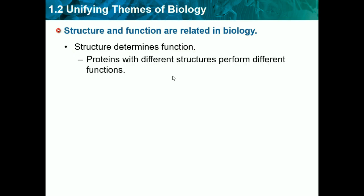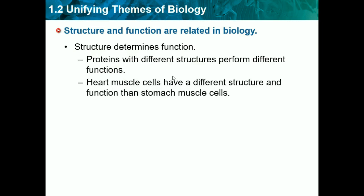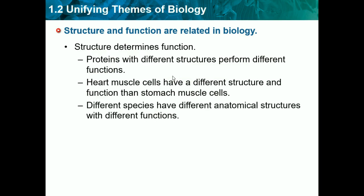Proteins with different structures perform different functions. Heart muscle cells have different structure and function than stomach muscle cells. And different species have different anatomical structures with different functions. Anatomical structures are just like bones or hands — structures that make up your body. A bat has a wing, which is its anatomical structure, and humans have hands, which is our anatomical structure.